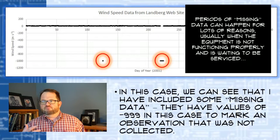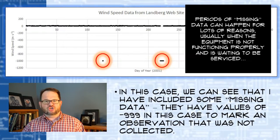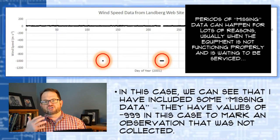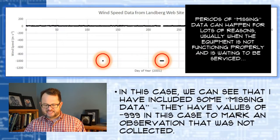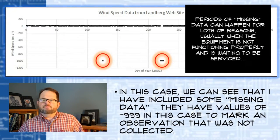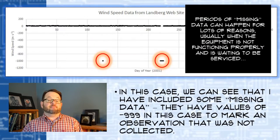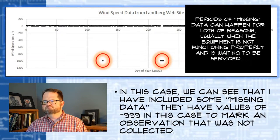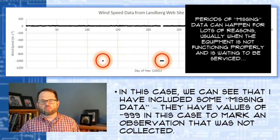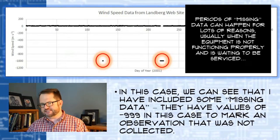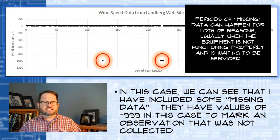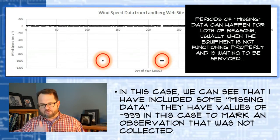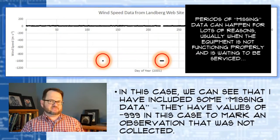Periods of missing data can happen for lots of different reasons. Typically the equipment was malfunctioning and shut itself down until a technician could come and service it — a very common thing. Maybe a fuse blew and the equipment is in standby waiting for someone to come out. If it's just some random technical problem with the equipment, that's actually not the end of the world for computing averages and other statistics, because those outages are fairly random — not caused by the speed of the wind or something like that.